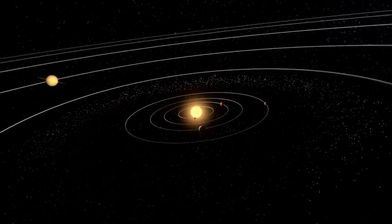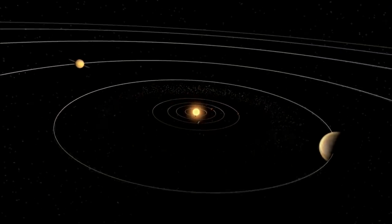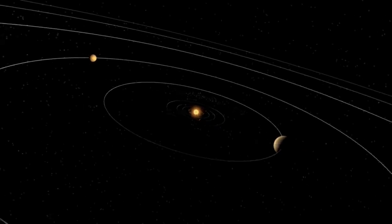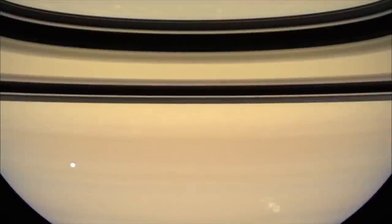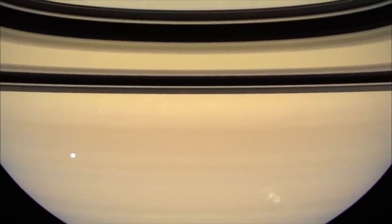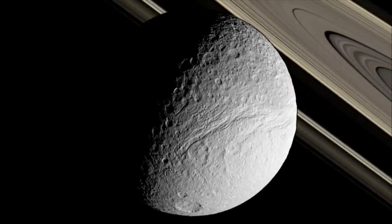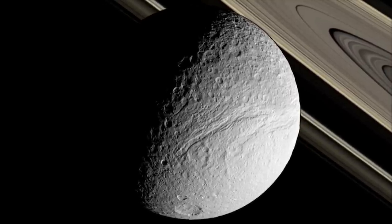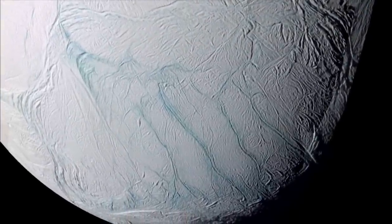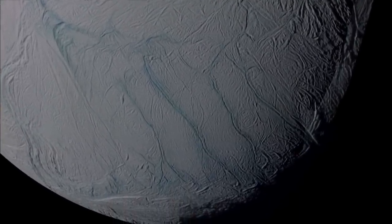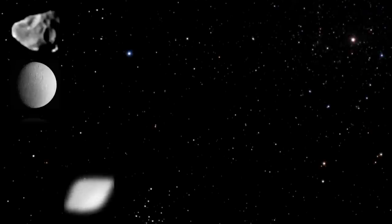Farther away, in the dim reaches of the outer solar system, water plays a different role. Around Saturn, water is everywhere. With temperatures near minus 180 degrees Celsius, it's far too cold for water to exist in a liquid state. Here, water remains frozen solid. So solid, that it doesn't just cover worlds, it makes worlds.